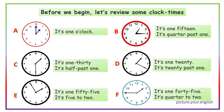E: it's 1:55, it's five to two. F: it's 1:45, it's quarter to two.